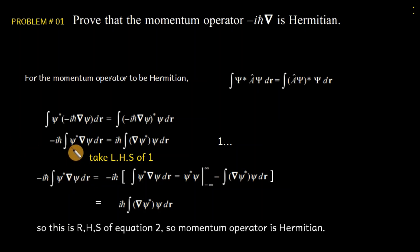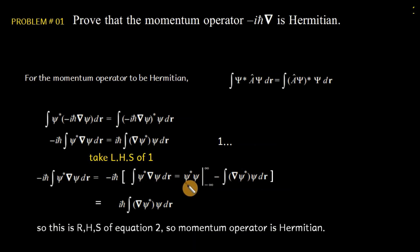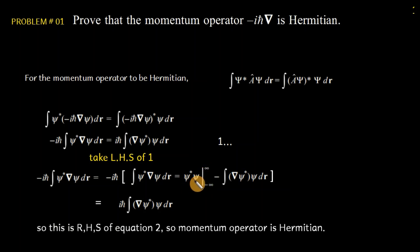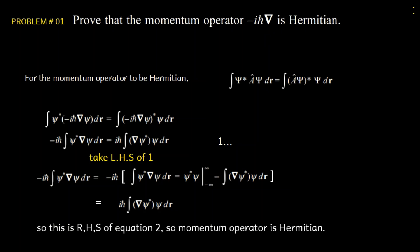So the left-hand side converts using integration by parts with −iħ, where the boundary term at infinity is zero because wave functions vanish at infinity. The result is iħ ∫ (∂psi_m/∂x)* psi_n dr, which is the right-hand side of equation 1. So the momentum operator is a Hermitian operator.